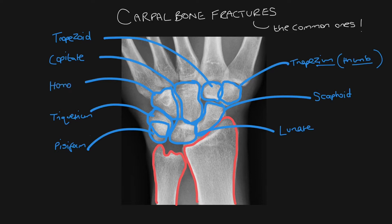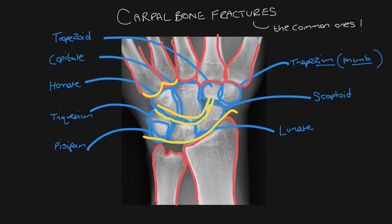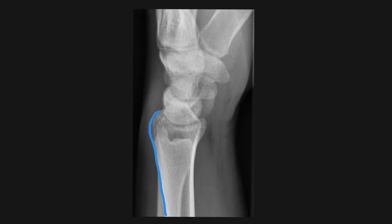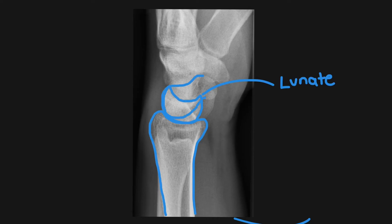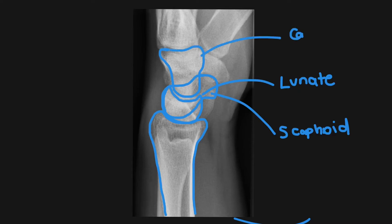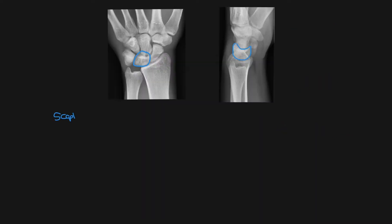Once you've done that, you want to look at the alignment of the carpal bones, so you draw the three carpal arcs and look again at the proximal metacarpals. On a lateral film you want to look at the distal radius and make sure it lines up nicely with the lunate, which is this moon-shaped bone. You can also see the scaphoid on a lateral, and you want to see the capitate sitting nicely in the lunate.